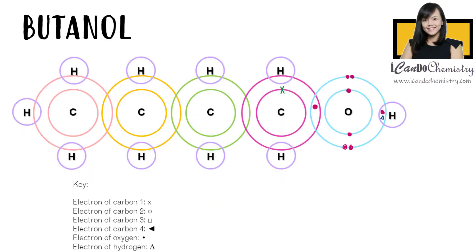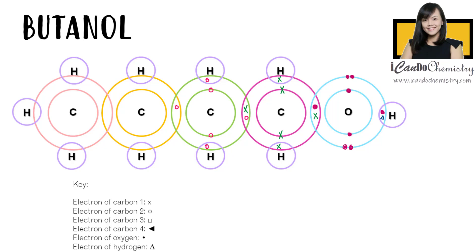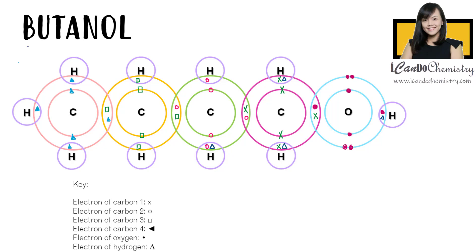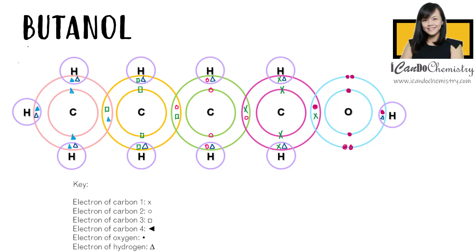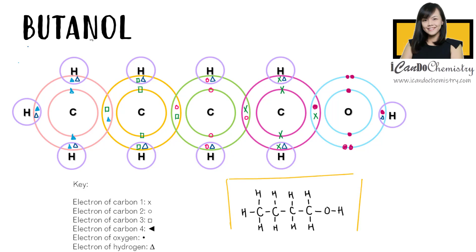What about butanol, which has four carbons? Similarly, one of the carbons will share its electron with oxygen, and the carbons will share one electron with each other. The carbons will then fulfill the octet rule by using their remaining electrons to form bonds with hydrogen. This is the dot and cross diagram of butanol. Let's replace each electron pair with a bond. We have achieved the structure of butanol.